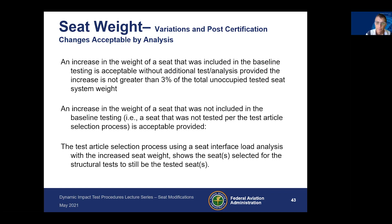If you hadn't done that, you can allow up to 3% increase from your total unoccupied seat tested weight without a retest. However, you have to also look at where that weight is being added. You would still have to go through your seat interface load analysis with the increased seat weight to show it was correctly selected for the structural test. Also, if you're increasing the weight of a different seat in the seat family that was not included in the initial test, you must show that the increased weight does not change your critical test case analysis.